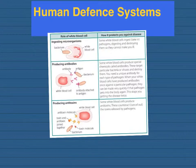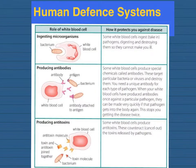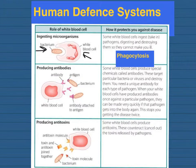Once pathogens get inside your body, they'll meet your second line of defence — the white blood cells of your immune system. The immune system will try to destroy the pathogens in several ways. The first method is by ingesting or engulfing microbes. The bacteria is engulfed by the white blood cell, which takes in the pathogens and digests and destroys them using enzymes. This process is known as phagocytosis — a key word worth learning, because if asked how white blood cells destroy pathogens, you can mention phagocytosis and get a mark.